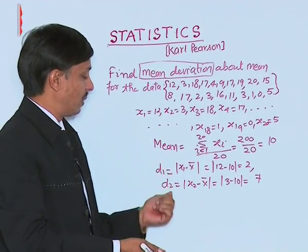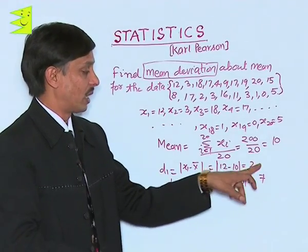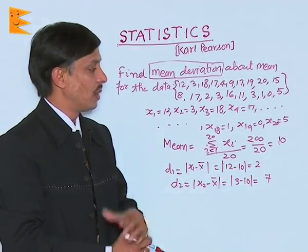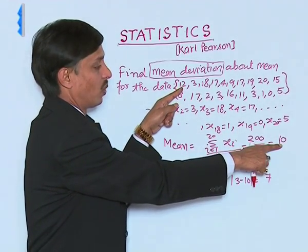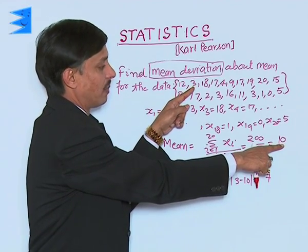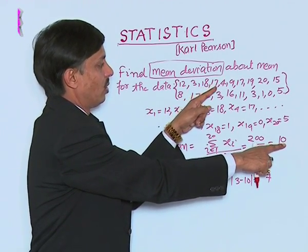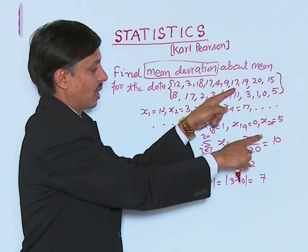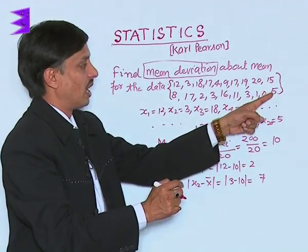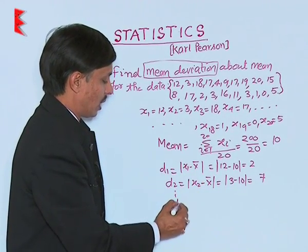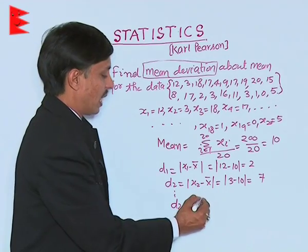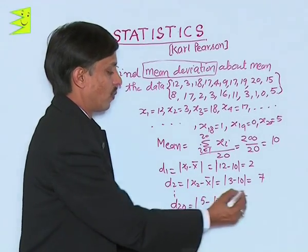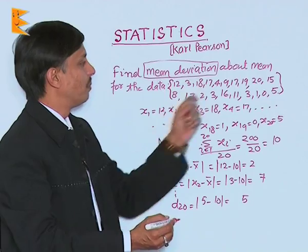Similarly, all 20 deviations are calculated: d1 = |12-10| = 2, d2 = |3-10| = 7, d3 = |18-10| = 8, d4 = |17-10| = 7, d5 = |4-10| = 6, d6 = |9-10| = 1, d7 = |17-10| = 7, and the last d20 = |5-10| = 5. Each time we subtract the mean and take the absolute value (mod).